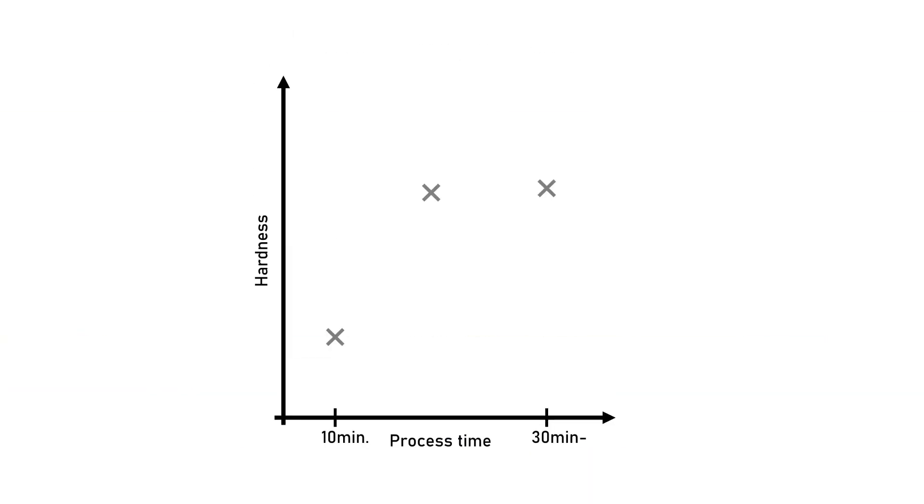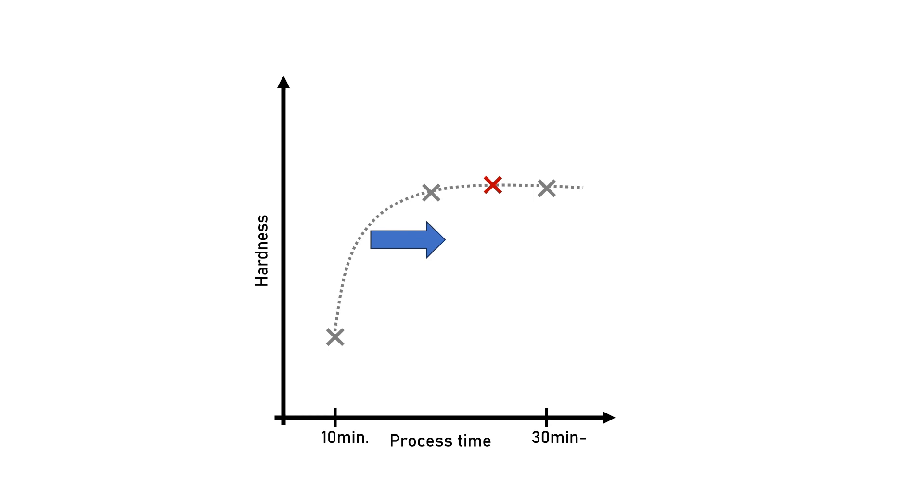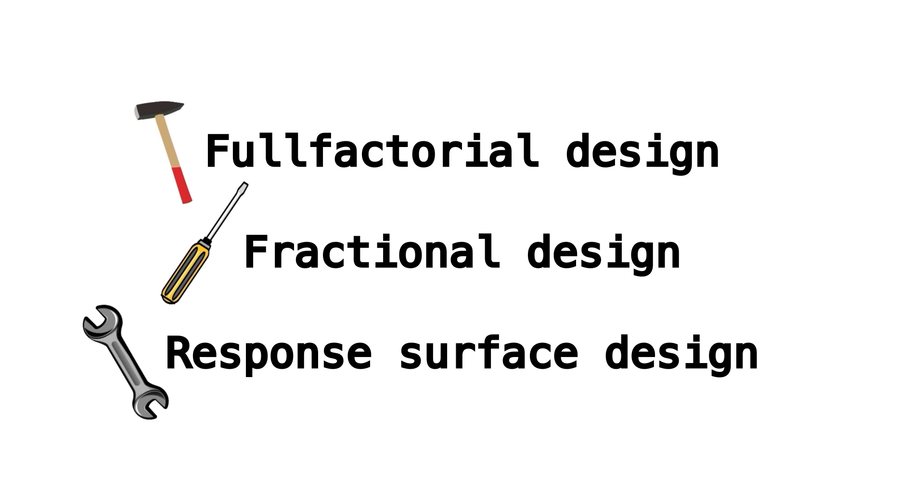Last but not least, when to use response surface designs. The obvious answer is when you've performed a two-level full factorial design and find the information isn't enough and you need more details. But a very good application is also finding robust process parameters. For example, if coating hardness increases as a function of process time until it reaches a plateau, for a robust process you'd set the process time away from the slope — then even slight variations in time won't influence the result much. Finding robust process parameters is neither possible with fractional designs nor full factorial designs, at least not with as few runs as in a response surface design.